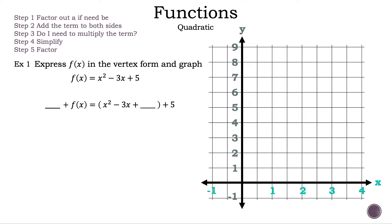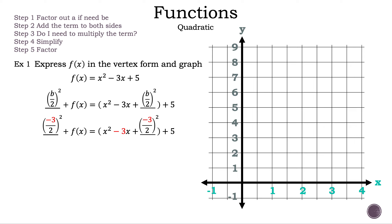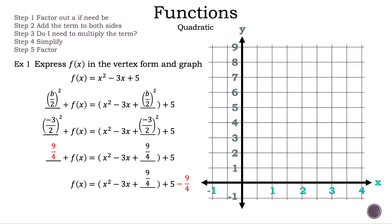The next step is to add the same number on each side. We add b over 2 squared to both sides. In this case, b is negative 3. So now we have negative 3 halves squared plus f of x is equal to the quantity of x squared minus 3x plus negative 3 halves squared plus 5. Now, let's simplify negative 3 halves squared to 9 fourths, and subtract 9 fourths on both sides.